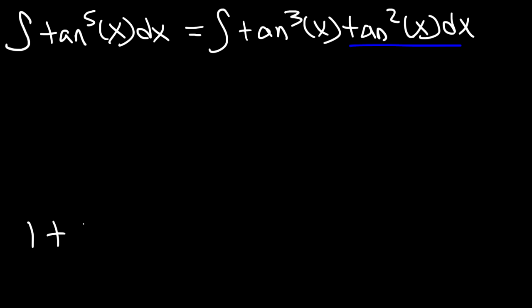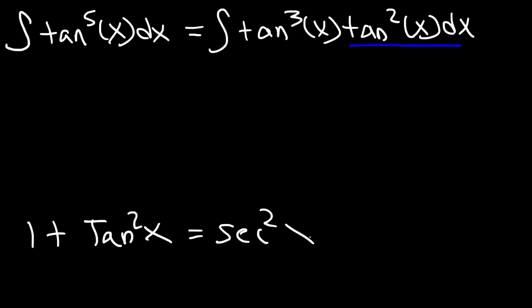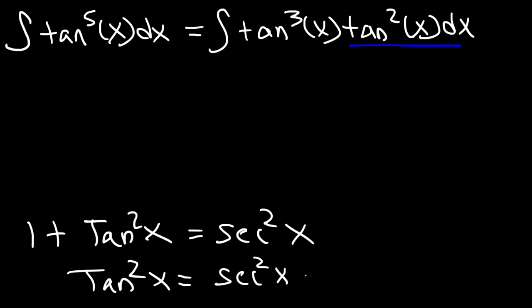Perhaps you know that 1 plus tangent squared is equal to secant squared. So if you subtract both sides by 1, you can see that tangent squared is going to be secant squared minus 1.